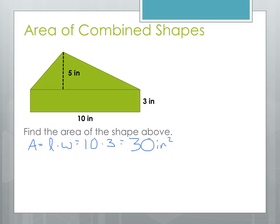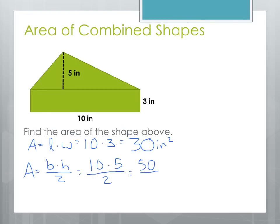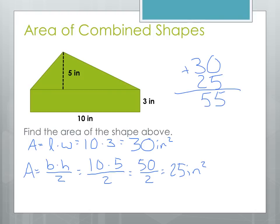Next we have to find the area of the triangle. The area of a triangle is base times height divided by 2. The base of this triangle is the same as the labeled side of the rectangle, so the base is 10. The height is 5, so we get 10 times 5 divided by 2: that's 50 divided by 2, for a total area of 25 square inches. So the total combined area is 30 plus 25, or 55 square inches.